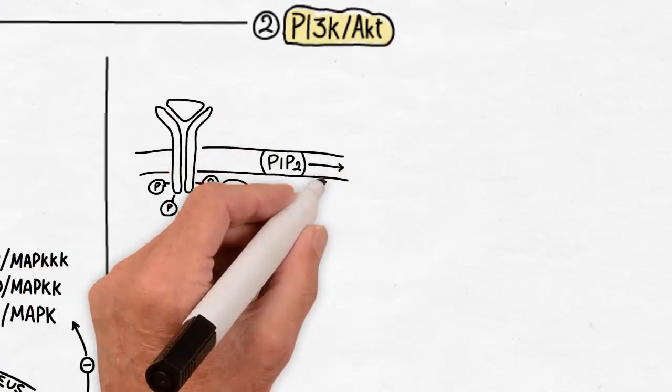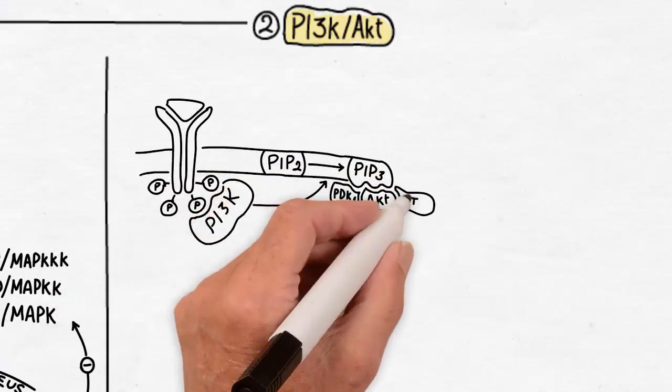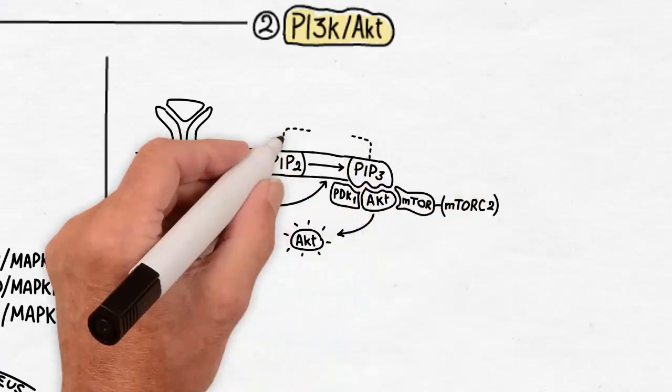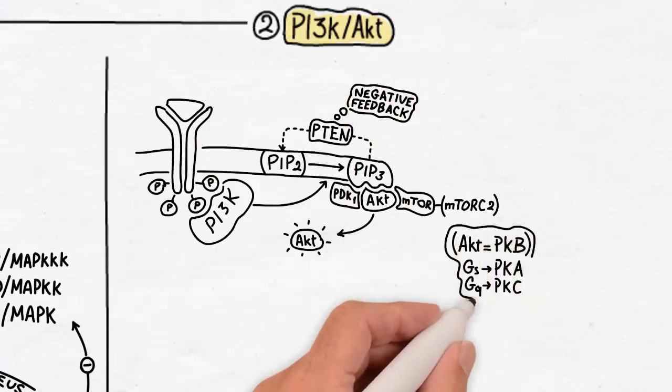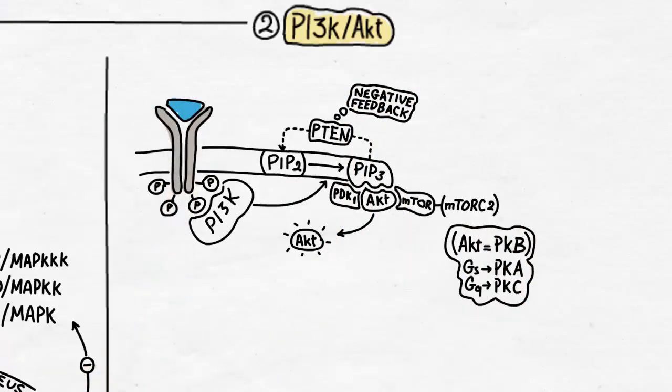The second major RTK pathway is the PI3 kinase or the PI3K-AKT pathway. The adapter protein here is the enzyme PI3 kinase itself, that phosphorylates the PIP2 and converts it into PIP3. This could be reversed by a PTP called PTEN that was discovered to be mutated in many cancers. The PIP3 itself is a docking site for other proteins, the most important of which is the AKT, which is also called protein kinase B.